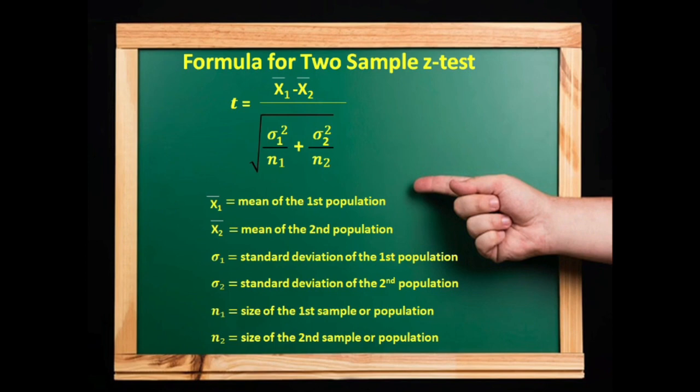The formula for two sample Z-test is Z equals x1 bar minus x2 bar upon under root σ1 square by n1 plus σ2 square by n2.